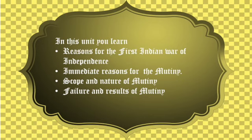In this chapter, we are going to learn about the reasons for the First War of Indian Independence 1857, the immediate reasons for the mutiny, scope and nature of the mutiny, and the failure and results of the mutiny.